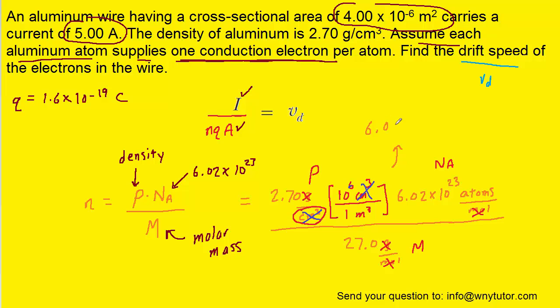And when you do that, you should get 6.02 times 10 to the 28th atoms per meter cubed. And that will be indeed the correct value for n. Remember, n was the number of charge carriers per unit volume. Charge carriers per unit volume. That's exactly what we have.